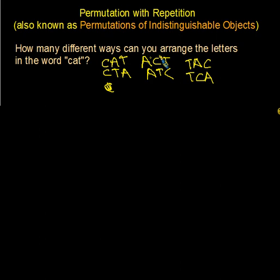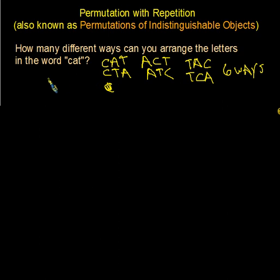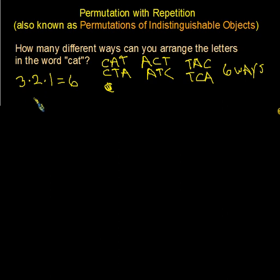These aren't all actual words, but they are legitimate arrangements of the letters in CAT. Notice that we have three letters and we ended up with six outcomes — six different ways. We could have used the fundamental counting principle: there were three possible letters for the first position, then two left over, then one more for the third. That gives us six, based on dependent events.